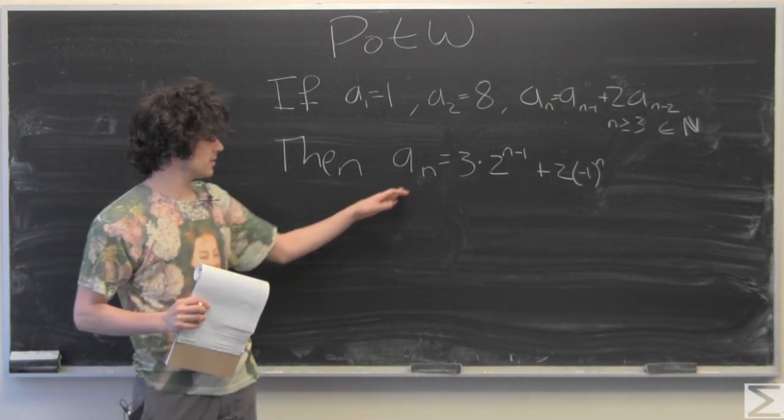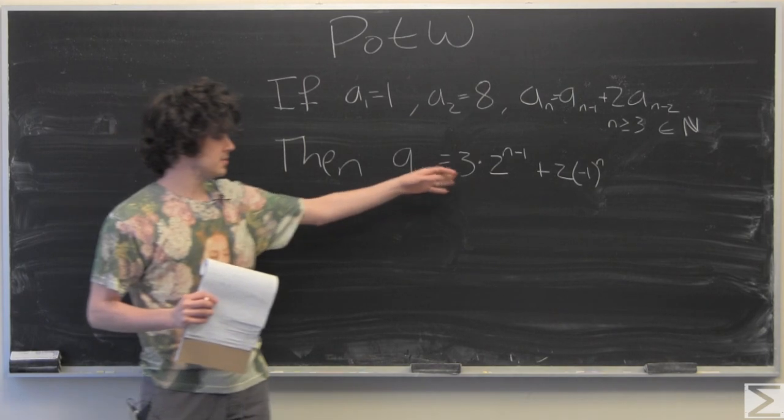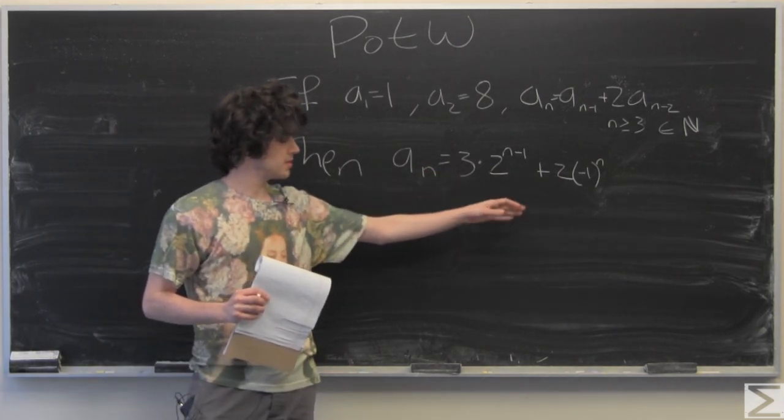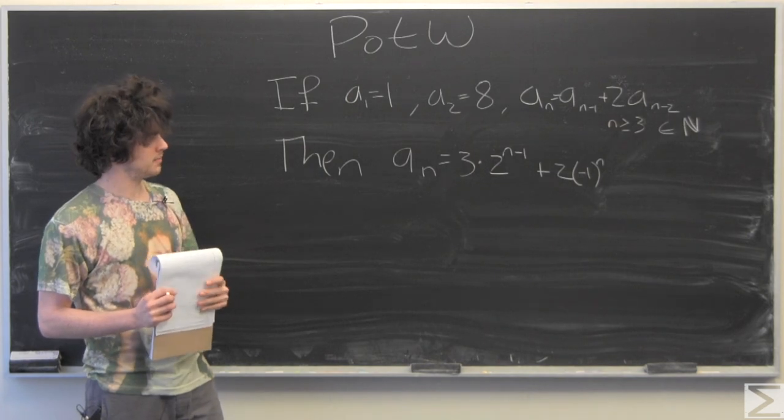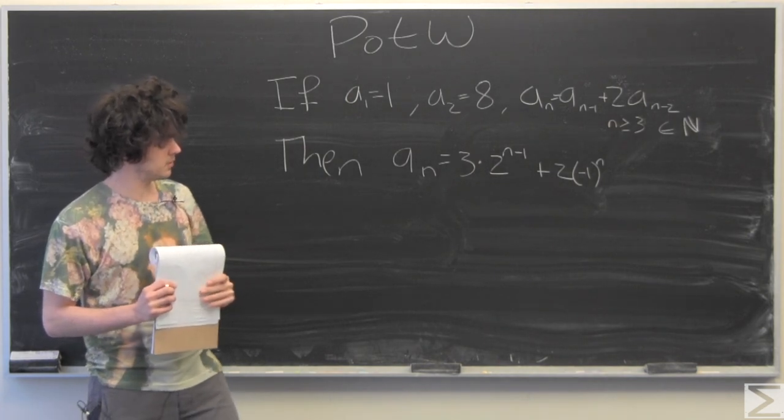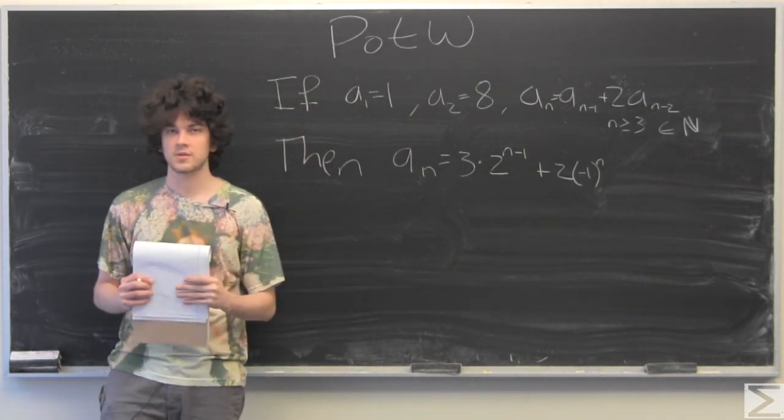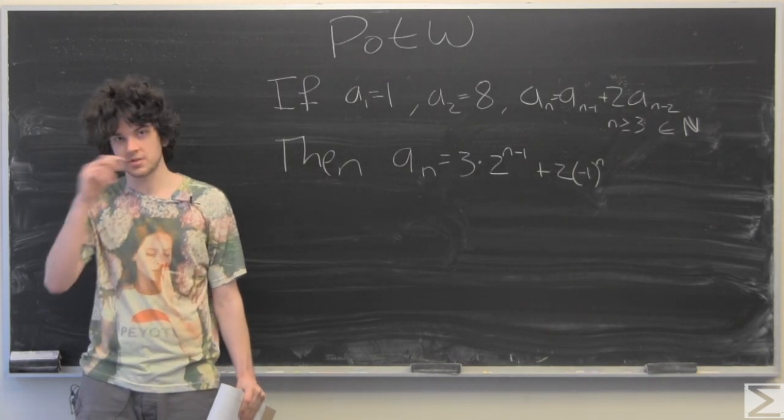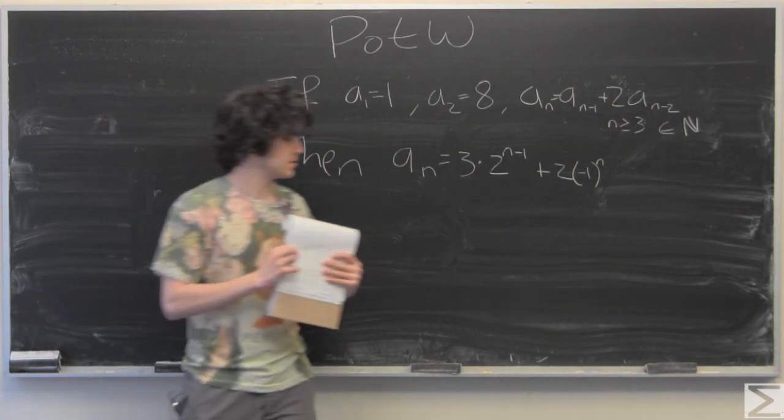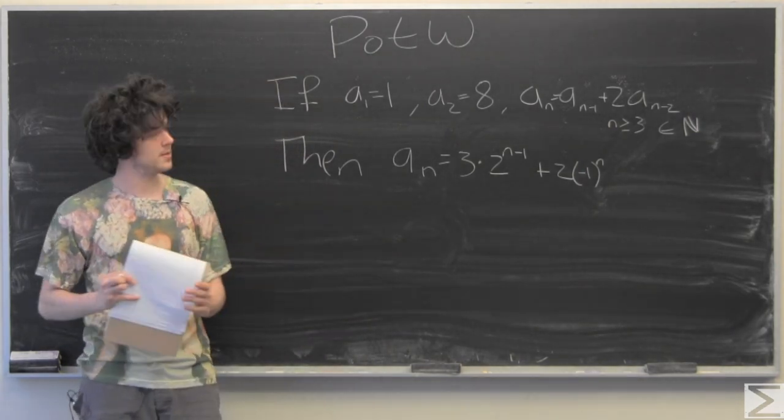And our claim is that a sub n is equal to 3 times 2 to the n minus 1 plus 2 times negative 1 to the n. First you notice this negative 1 to the n, and that means that every other term is going to alternate sign. That will come up later.